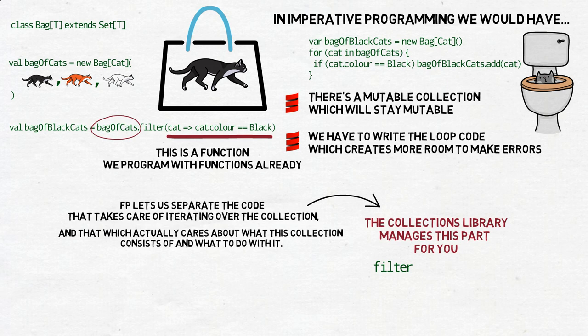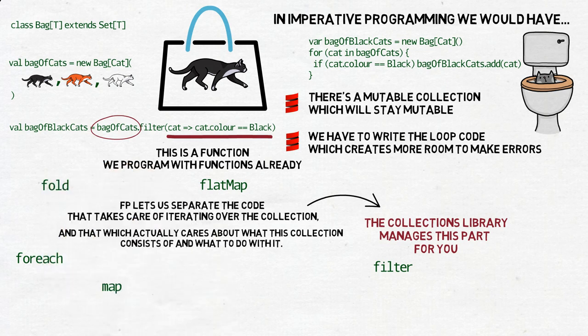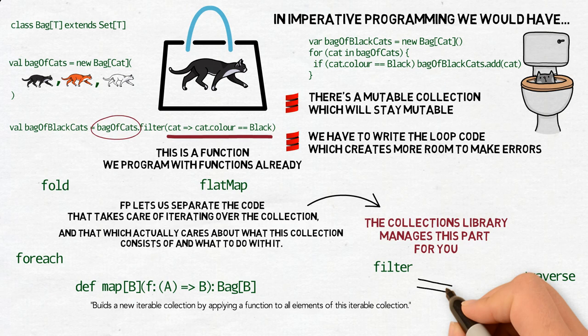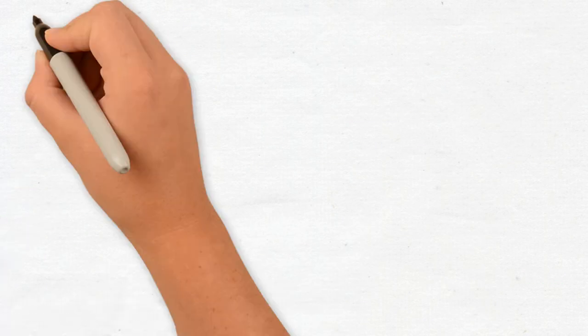Similarly, we have other methods like map, flatMap, foreach, fold, and traverse. I don't think I need to discuss them here in detail, but I'd like to point out that each of them encapsulates a way of operating on elements in a collection that does not need to know what elements it operates on. All that's left to do for us is to give those methods more specific functions as arguments, so they will know what to do. That means less code for us to write and thus fewer opportunities to make errors and more time to argue on Twitter.